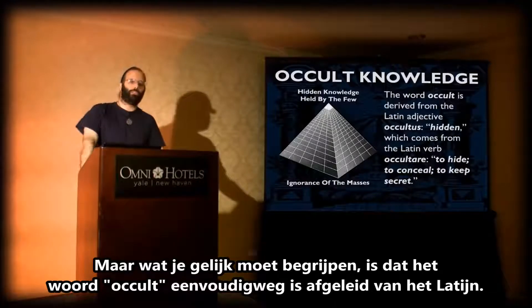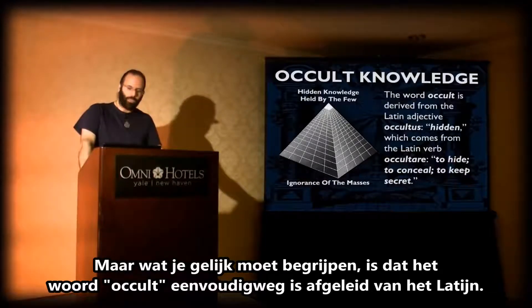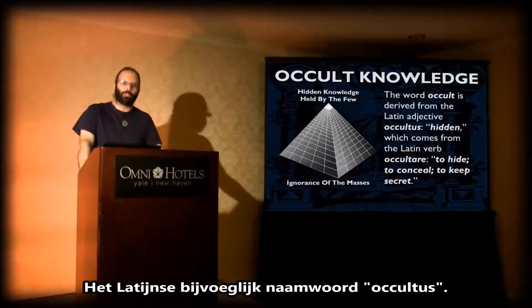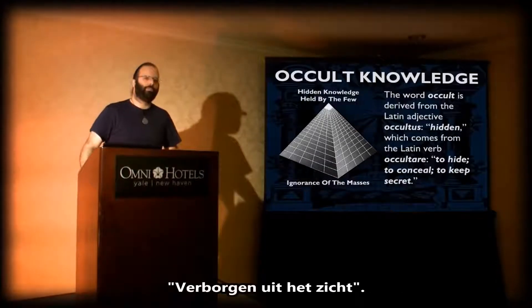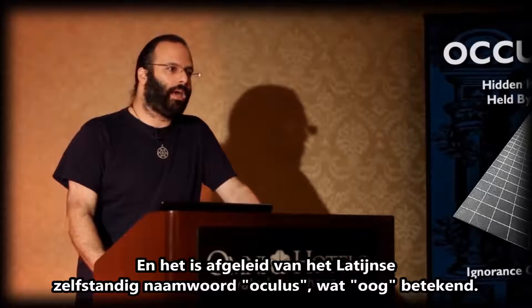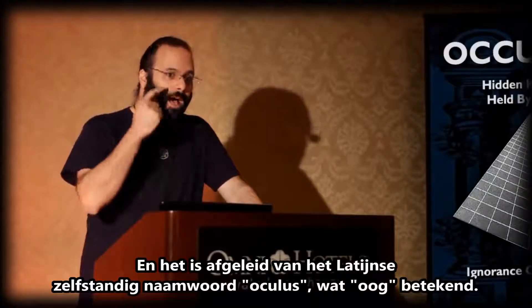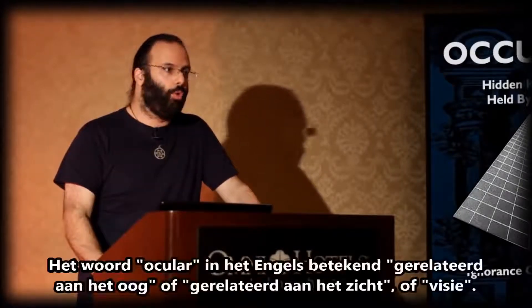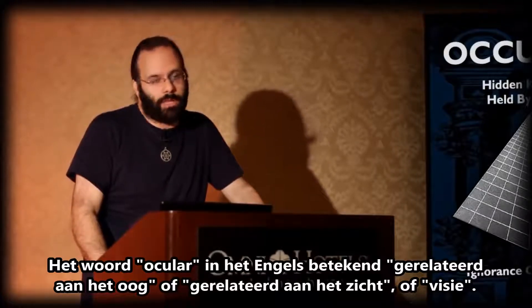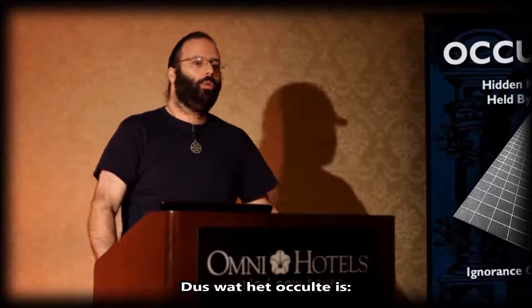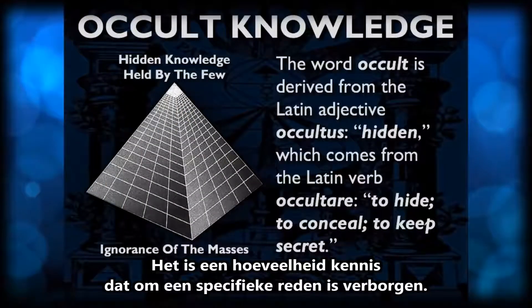What you have to understand right off the bat is that the word occult is simply derived from Latin — the Latin adjective occultus. Occultus in Latin means hidden, hidden from sight. It's derived from the Latin noun oculus, which means eye. The word ocular in English means related to the eye or related to sight or vision. So what the occult is, it is a body of knowledge that has been hidden away for a specific reason.